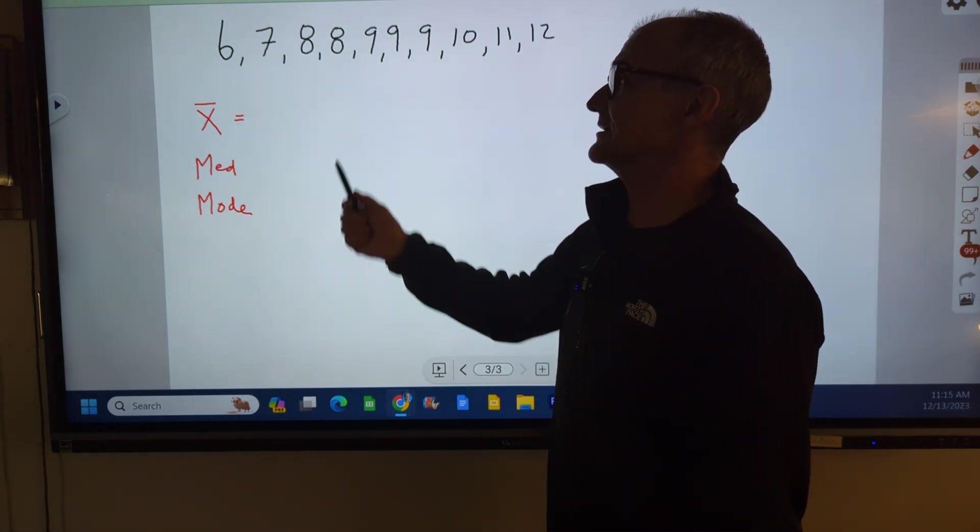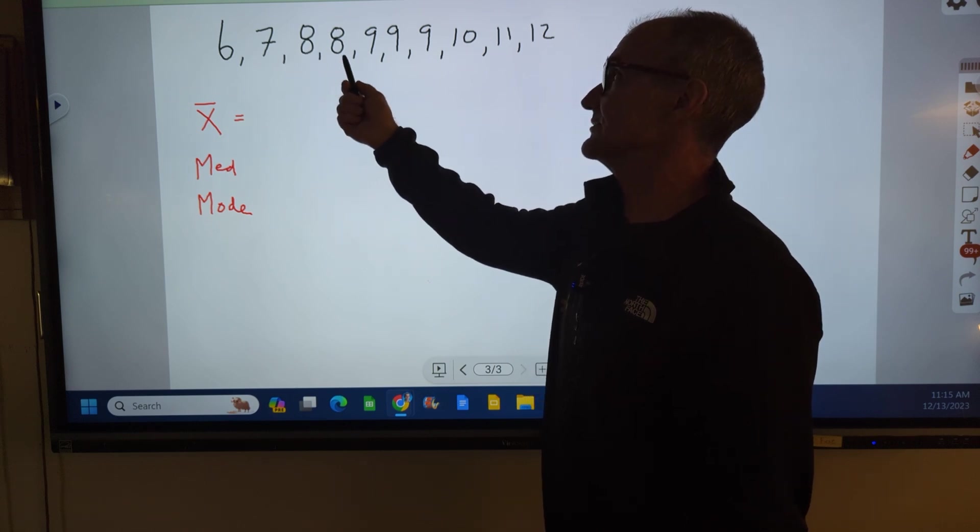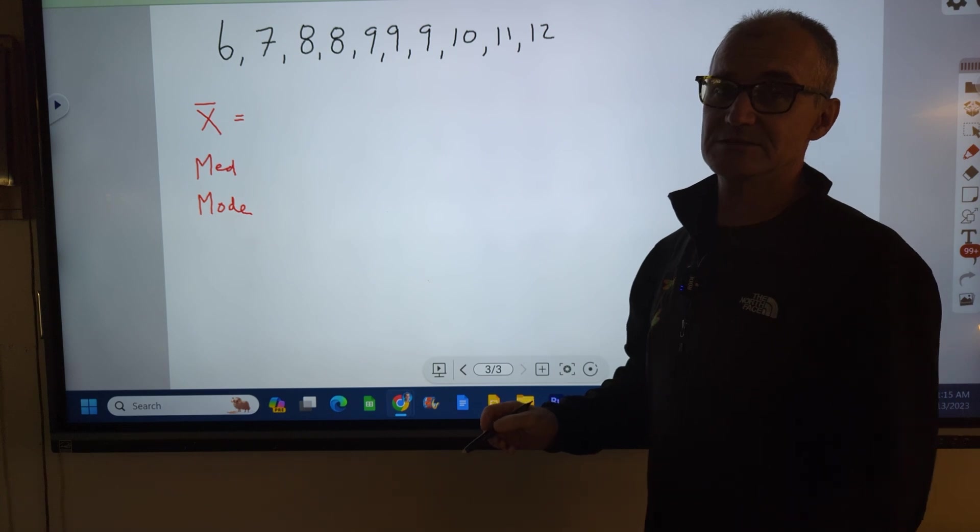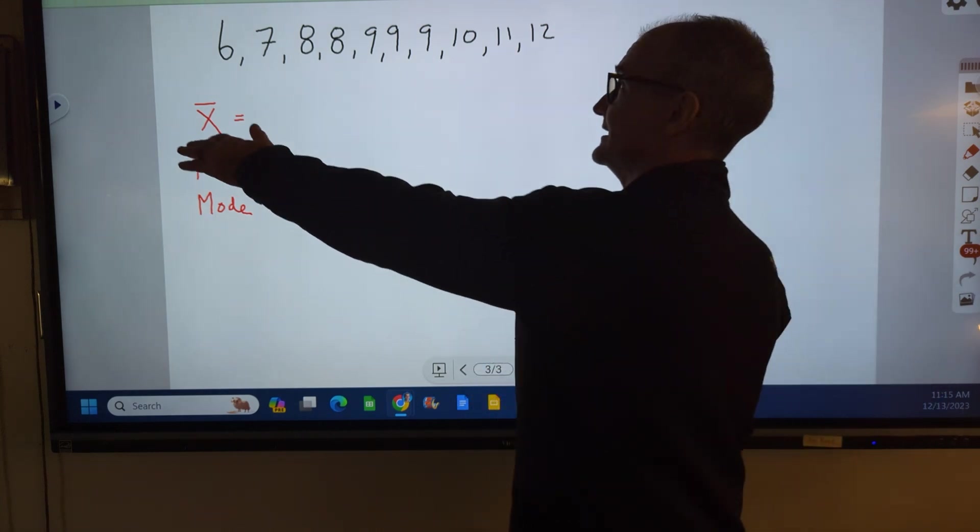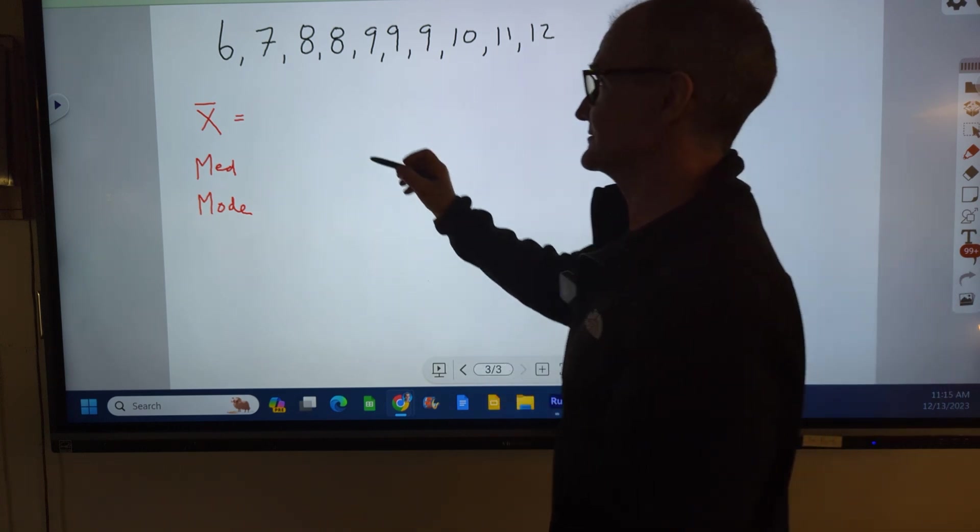All right, so these are my 10 values right here that I've collected. I have one value of 6, one value of 7, two values of 8, three values of 9. Usually the first thing you do is put that set of data in increasing order and then create a frequency distribution.